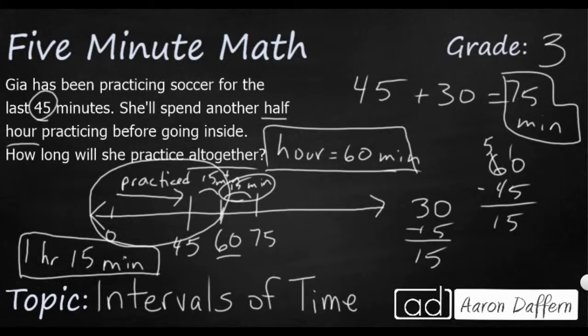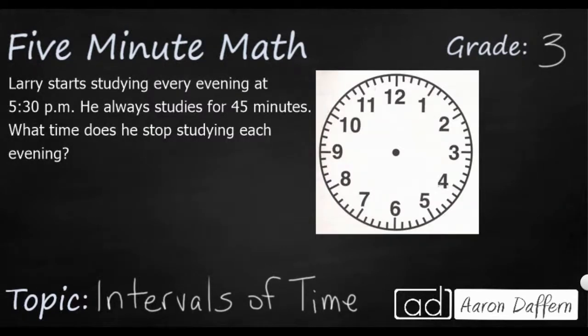Let's look at another example. So here's a different problem. Larry starts studying every evening at 5:30 p.m. So before we go any further, let's go ahead and put that on our clock. So 5:30 is going to look like this. And since it's 5:30, it's halfway through the hour. Your hour hand is not going to be pointing at 5. It's going to be halfway between 5 and 6 because it's halfway around the hour. And then he always studies for 45 minutes. So what time does he stop studying each evening?